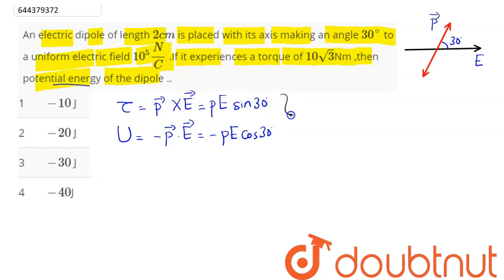Now when we divide these two equations, we have torque divided by potential energy as minus of sine by cos becomes tan 30 degree, and this pe cancels out, so we don't need the value of p and e.